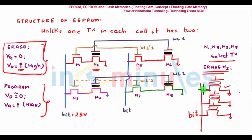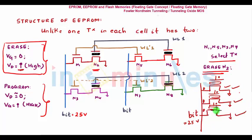The bit line is nothing but drain, so I would make it 25 volts. Gate voltage has to be zero, so all transistors would technically not be on. This would lead to a global erase — drain would be 25 volts for all column transistors, gate voltages would be zero, and erasing would happen for all transistors in that column. That is nothing but a global erase.